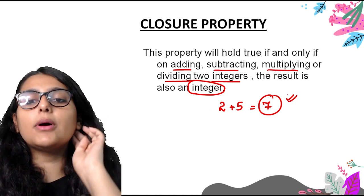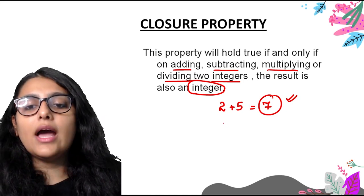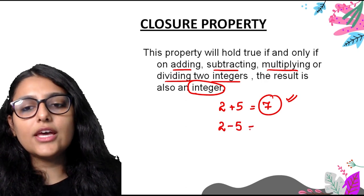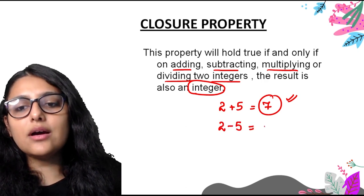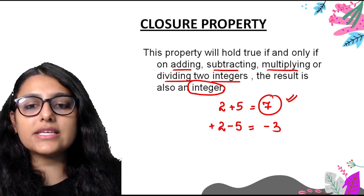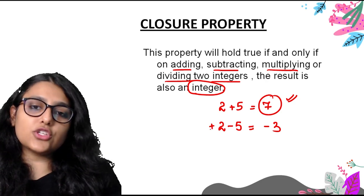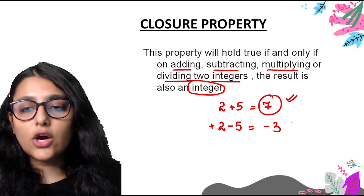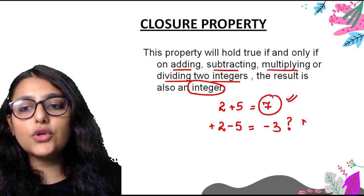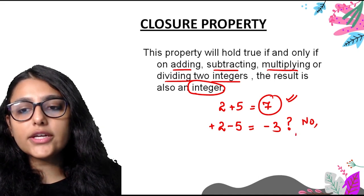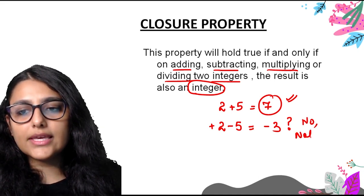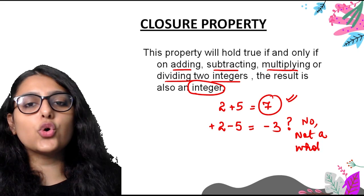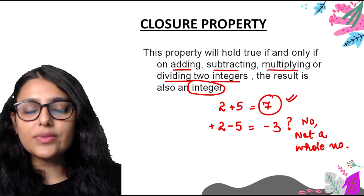Similarly, let's talk about subtraction. If we do 2 minus 5, the answer is minus 3. Now, is minus 3 a whole number? No, it is not a whole number. So for subtraction of whole numbers, the closure property does not hold true. Now we need to check these four operations for integers specifically.